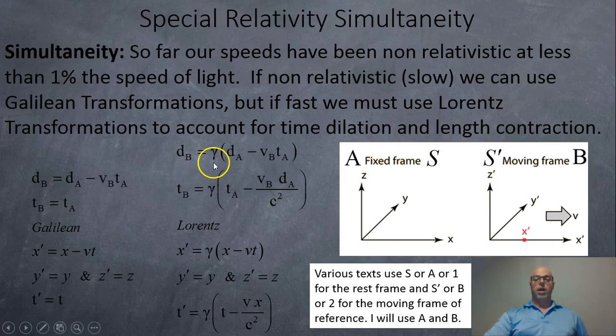You have to include the gamma factor because of time dilation and length contraction. And so you'll see that instead of dA subtract VBTA, it's gamma dA subtract VBTA to get the Lorentz location. And for time, instead of times being equal, now it's the gamma factor times the time, subtract the relative velocity between them, the distance according to the rest observer divided by the speed of light squared.